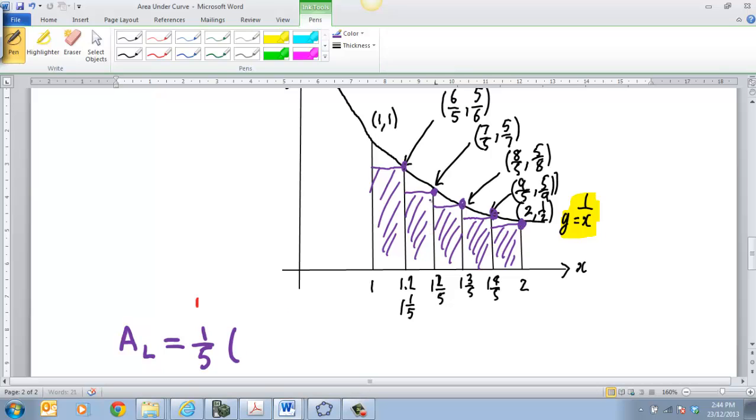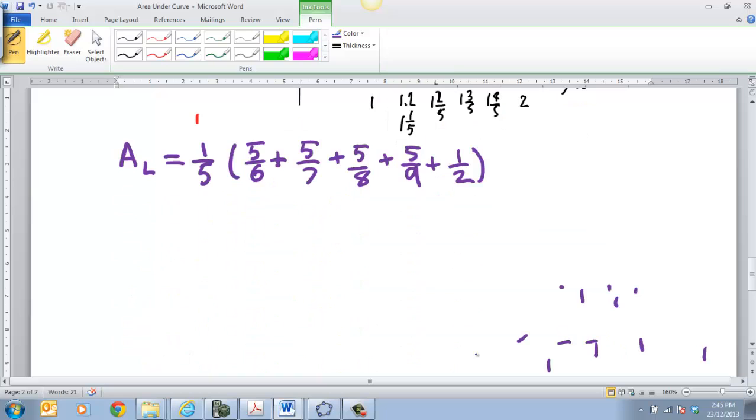So just to save some time, if we want to work out what our area of our lower estimate is going to be, that's going to be simply the width of our box, which is 1 fifth. That's how wide each of these boxes are. And then I'm simply going to be adding all of these points here. So that point there is going to be 5 on 6 plus the next point which is 5 on 7 plus 5 on 8 plus 5 on 9, and the last one is 5 on 10 or a half. If I do that calculation on my calculator, you'll get the area of your underestimate.